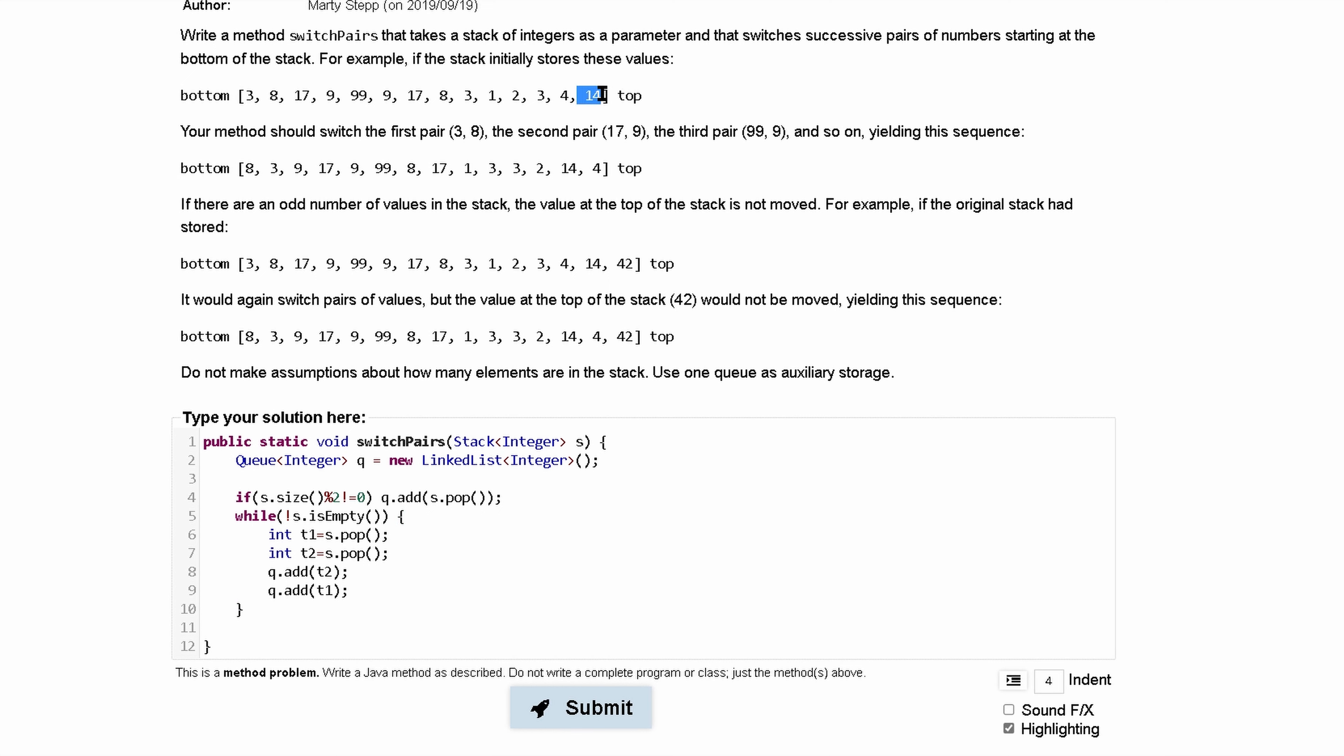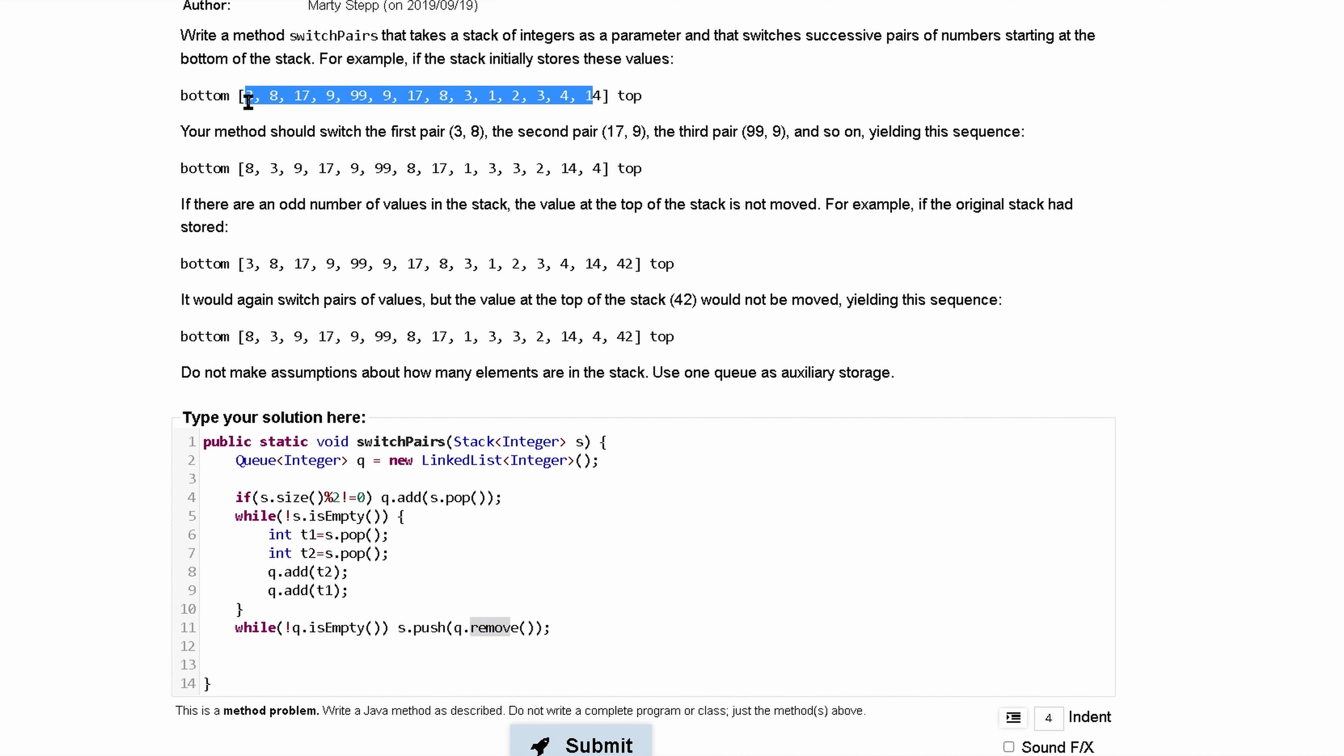So now we have the top of our stack in the front of our queue. So we can add this back to our stack by just doing this. This while loop is going to do, we're pushing to our stack while our queue is not empty, and we have a queue removed. But this is going to be in the opposite order, right?